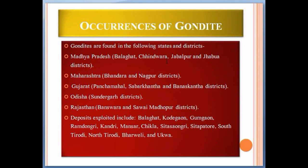Occurrences of gondite: gondite is found in the following states and districts — in Madhya Pradesh: Balaghat, Chindwara, Jabalpur, and Jhabua districts; in Maharashtra: Bhandara and Nagpur districts; in Gujarat: Panchmahal, Sabarkantha, and Banaskantha districts; in Odisha: Sundargarh district; in Rajasthan: Banswara and Sawai Madhopur districts.